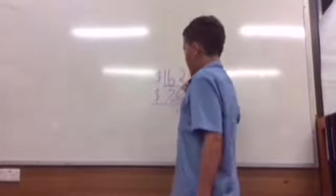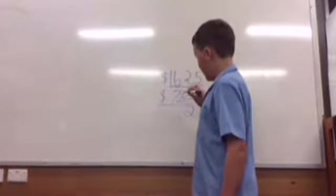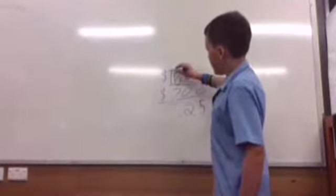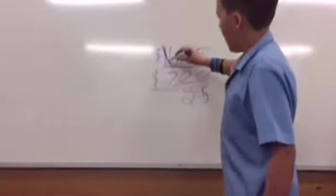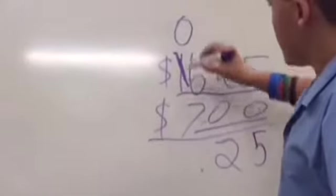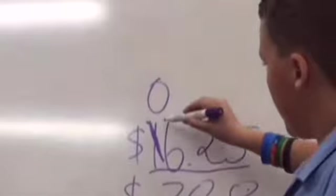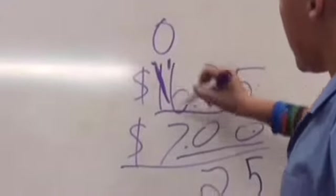Now we have 6 minus 7. That is not possible. So what we need to do is take away the 1 from this column, leaving it as 0. Then we put the 1 here to make it 16.